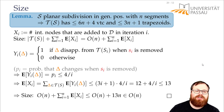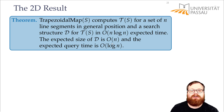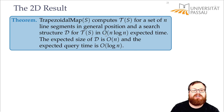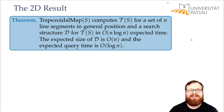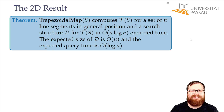We have now shown that the query time is O(log n) and the expected size is O(n). Since the construction time only depends on the size and the query time, we also get for free an expected construction time of O(n log n). This concludes the proofs and the construction of our data structure. Thank you for watching.